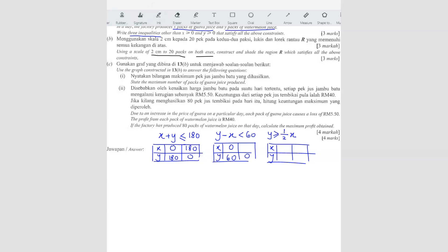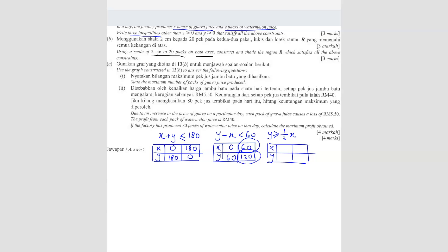Because when Y is 0, we get negative 60, which can't be plotted on the graph since the graph is all on the positive side. So we have to use a different number. If we put X as 60, then Y is 120. So instead of using 0, we use X equals 60 and Y equals 120 as our two points for that line.